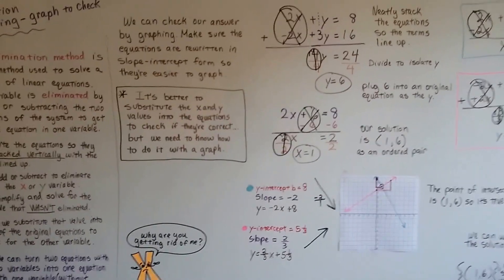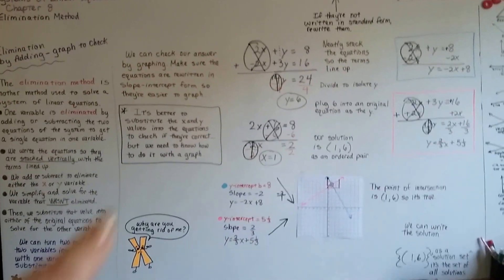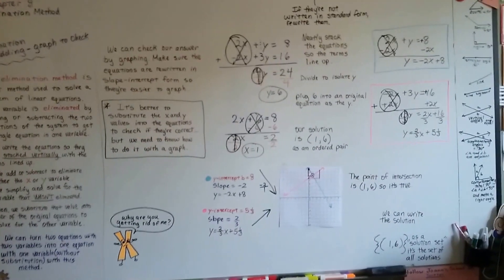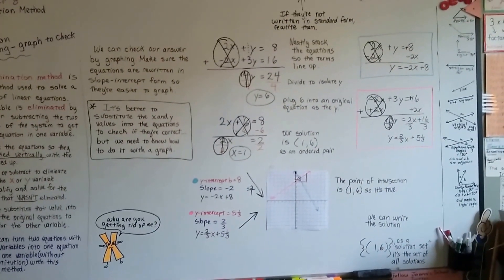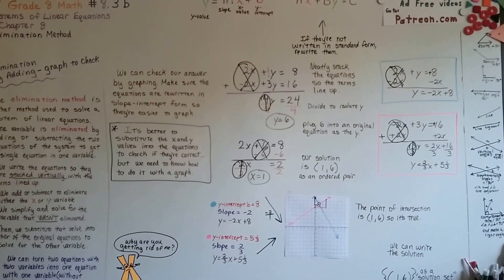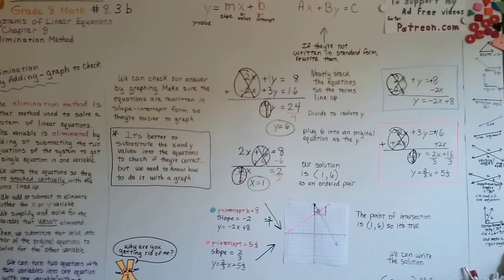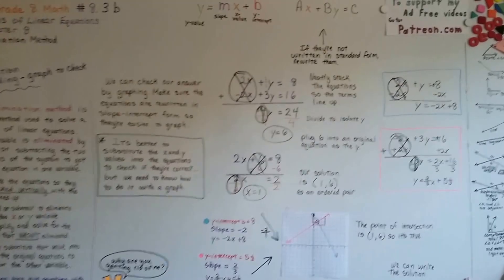So that's the elimination method by adding and graphing it to check. Just remember that it's actually better to substitute the x and y values, that 1 and that 6, into the equation to check to see if it's right. It's much better. We're going to go on to 8.3c, and we're going to talk about elimination by subtracting. I'll see you there. Bye.